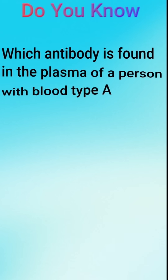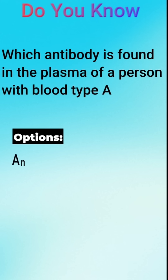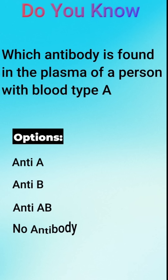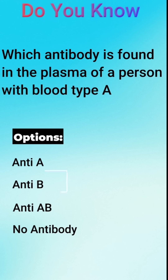Which antibody is found in the plasma of a person with blood type A? The options are: Anti-A, Anti-B, Anti-AB, or no antibodies? The correct answer is B, Anti-B. A person with blood type A has A antigens on the red blood cells and anti-B antibodies in the plasma, which fight against B antigens.